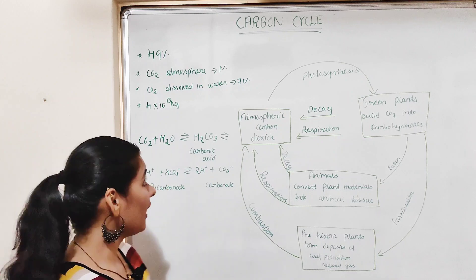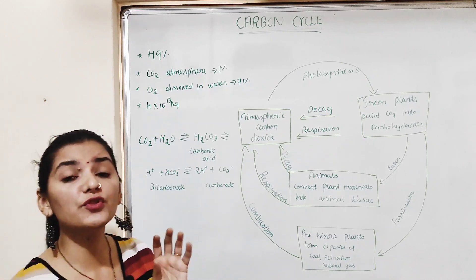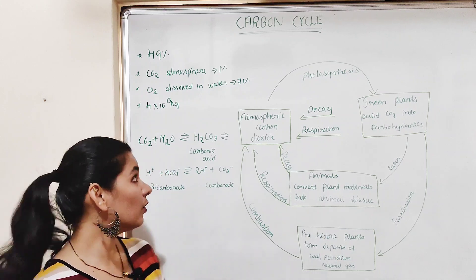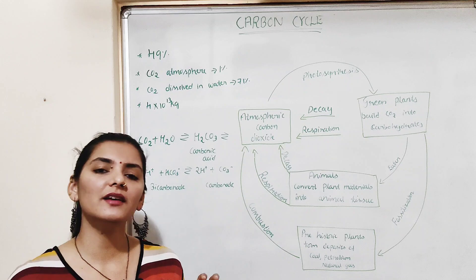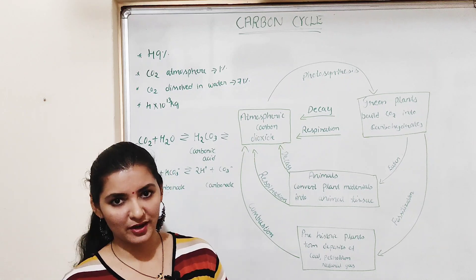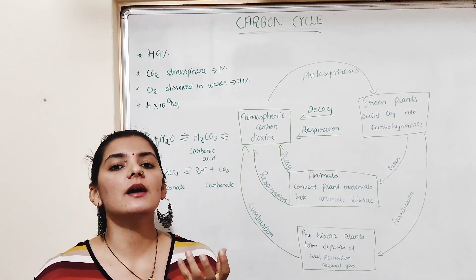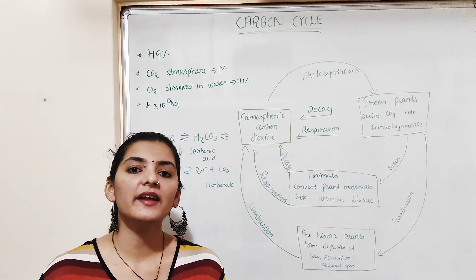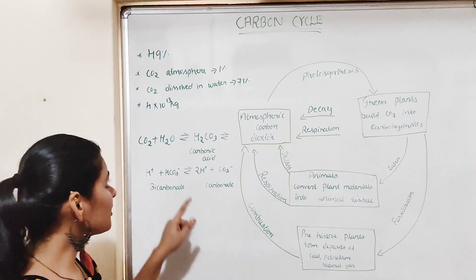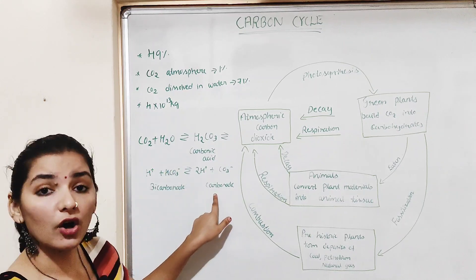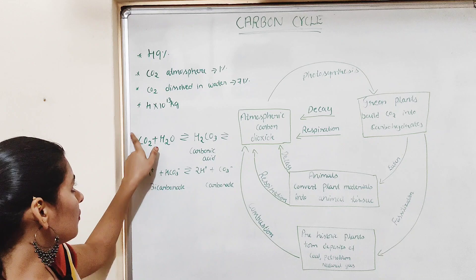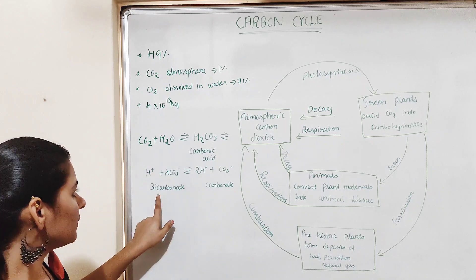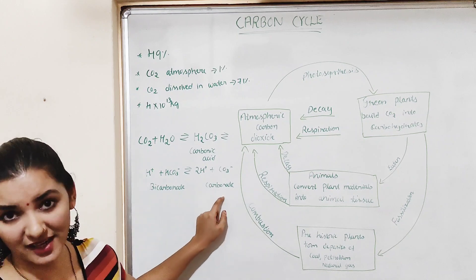According to some estimations, annually 4 × 10¹³ kg of carbon is used by producers to produce carbohydrates. Apart from that, some carbon dioxide dissolved in the sea or ocean reacts with water to produce bicarbonate or carbonate.